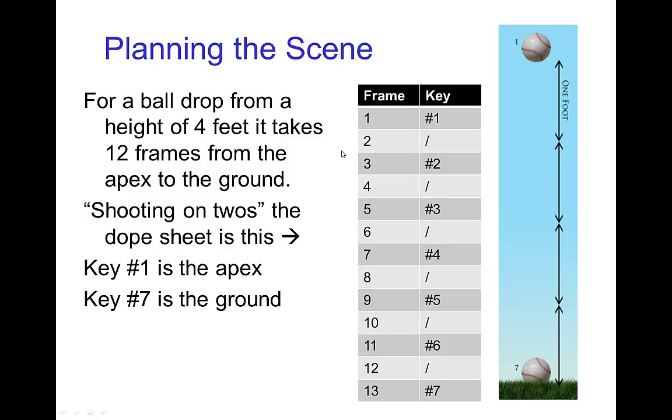If you're shooting on twos, your dope sheet would look something like this. The first key drawing is at the start, at the apex, and then 12 frames later the ball hits the ground, and since you're shooting on twos that would be drawing number seven.